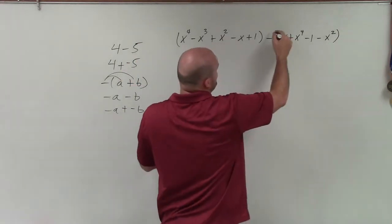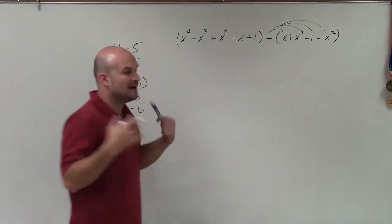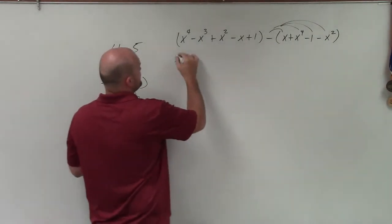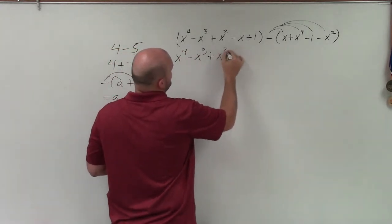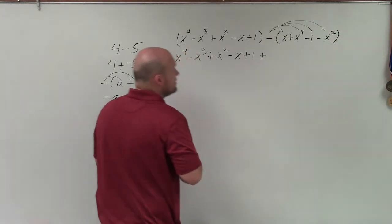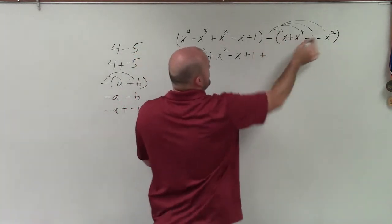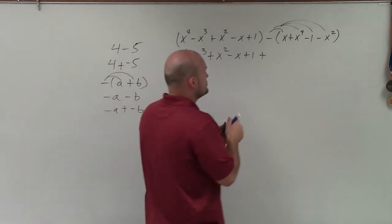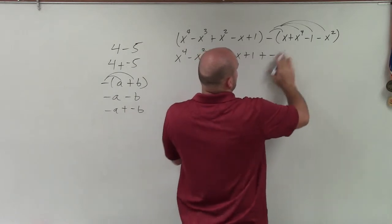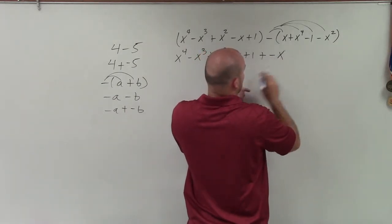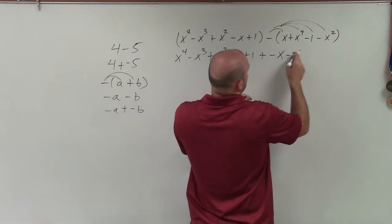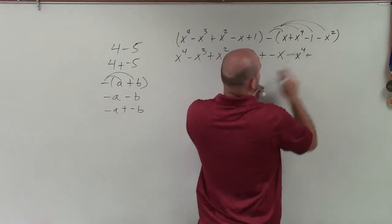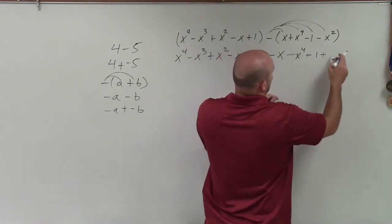So what I'm going to do is I am going to distribute my negative sign. And by distributing my negative sign, I am just going to now turn this into an addition problem. So it's going to say x to the 4th minus x cubed plus x squared minus x plus 1, plus—and the reason why I write plus is because now I'm determining the opposite sign for each one, just like I go from here to there. So now that is negative x minus x to the 4th, positive 1, and positive x squared.